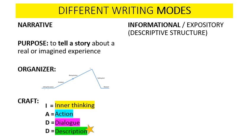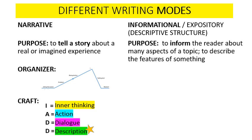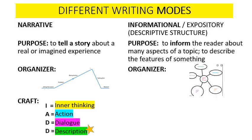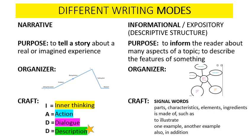On the other hand, when we're writing informational text, our purpose is to inform the reader about many aspects of a topic. When our structure is descriptive, we're trying to describe all the features of our topic. The organizer we're going to use is a bubble map — the main topic goes in the center, and all the different features go off in different directions. There's usually not a particular order to these features; they can be presented in any order. For craft, we're going to use signal words that tell that we're describing.